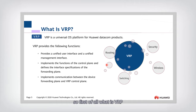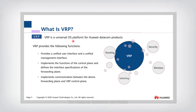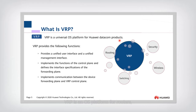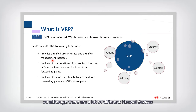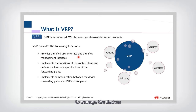So first of all, what is VRP? VRP is a universal operating system platform for Huawei Datacom products. VRP can be an OS platform for routers, switches, and other devices. The main functions VRP provides include a unified user interface and a unified management interface, so although there are many different Huawei devices, we can all use VRP as the unified interface to manage them.